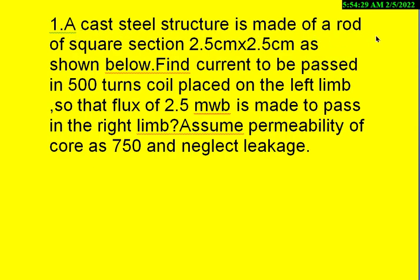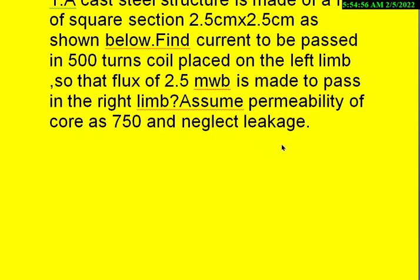A cast steel structure is made of a rod of square section 2.5 cm by 2.5 cm as shown below. Find the current to be passed in 500 turns coil placed on the left limb so that the flux of 2.5 milliweber is made to pass in the right limb. Assume the permeability of the core as 750 and neglect the leakage flux.